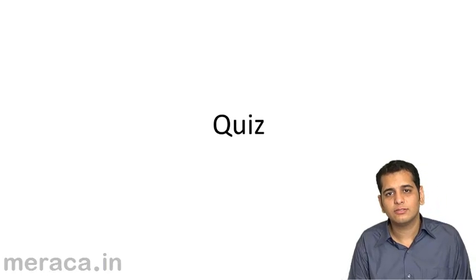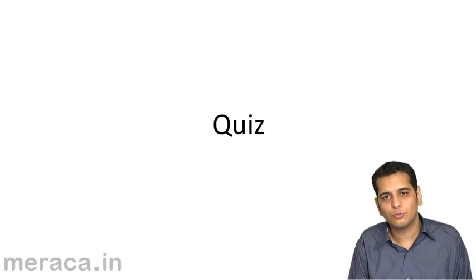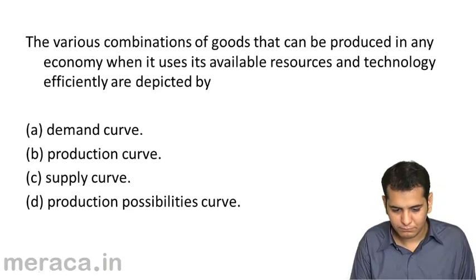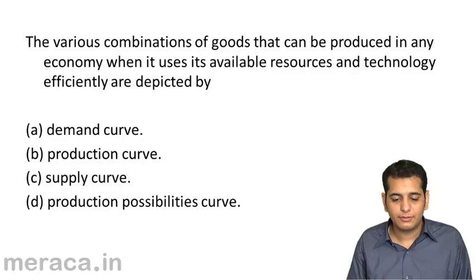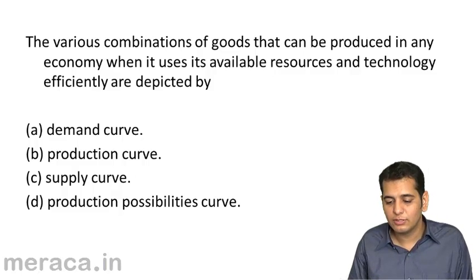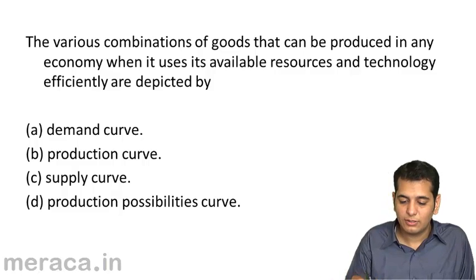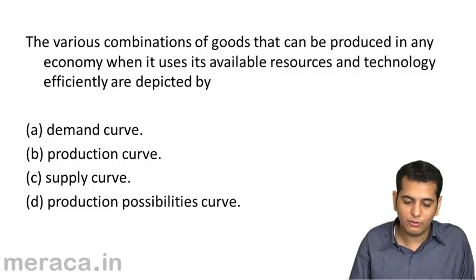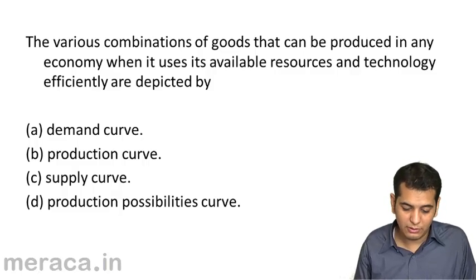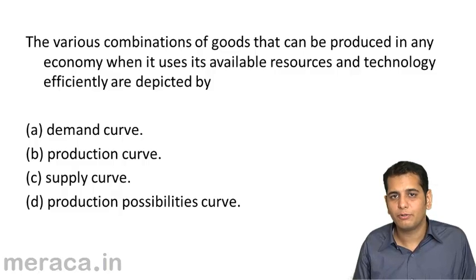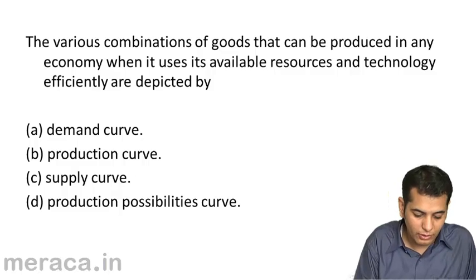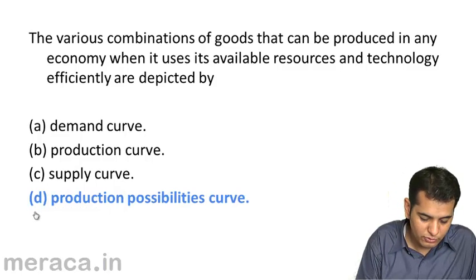Let's take a short quiz. First question: the various combinations of goods that can be produced in any economy when it uses its available resources and technology efficiently are depicted by a — demand curve, b — production curve, c — supply curve, or d — production possibility curve. The correct answer is production possibility curve.